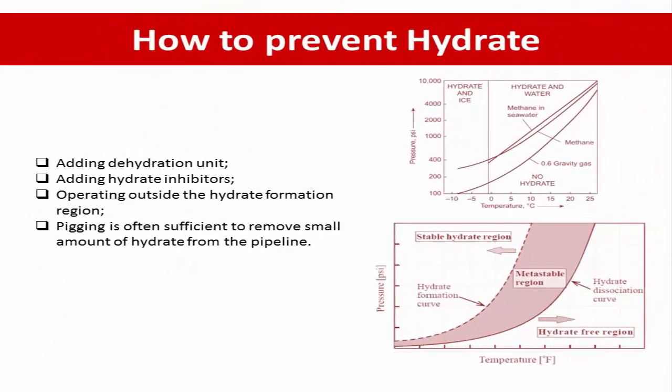How to prevent hydrate formation? Gas hydrate can form under high pressure and low temperature conditions where free water is present. Therefore, there are typically three or four methods to prevent or mitigate hydrate formation. The first method is adding a dehydration unit upstream. The second method is adding a hydrate inhibitor, or operating outside the hydrate formation region — such as maintaining operating temperature higher than the hydrate formation temperature, or operating at a pressure lower than the hydrate formation pressure.